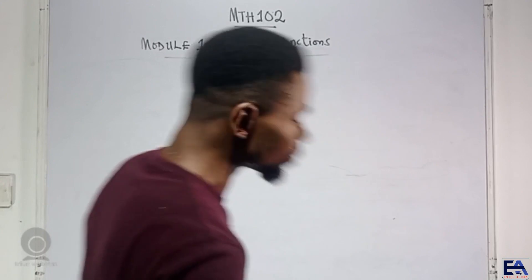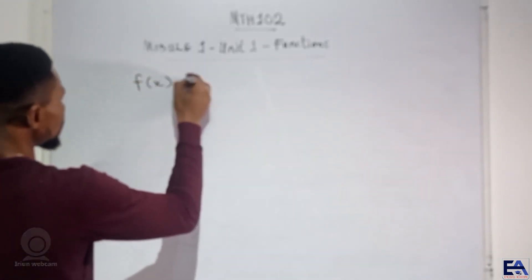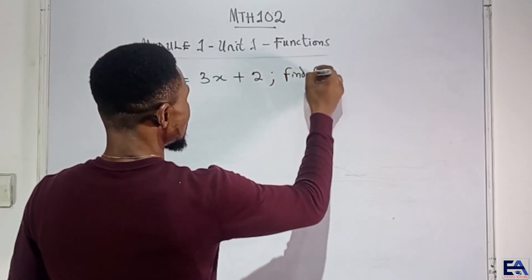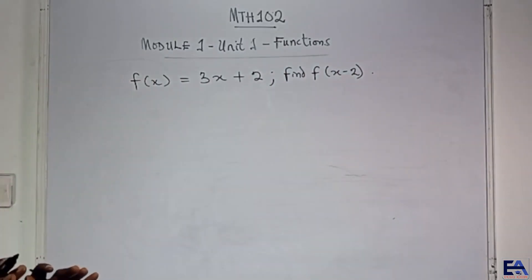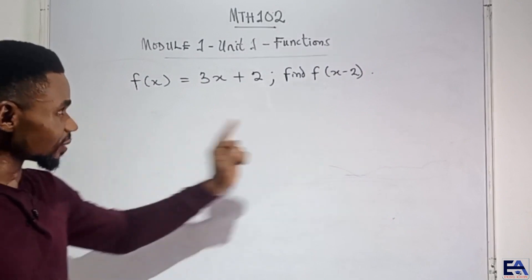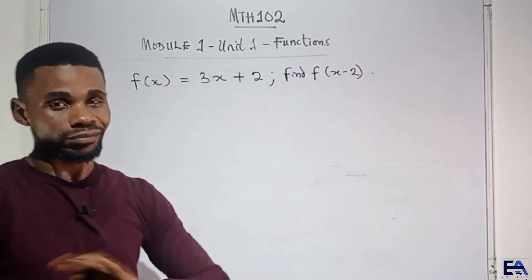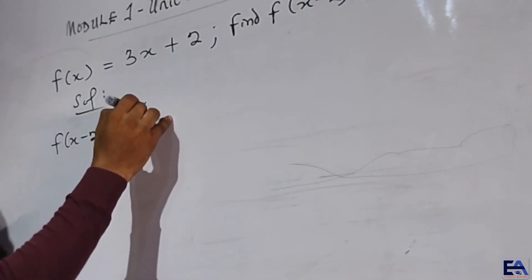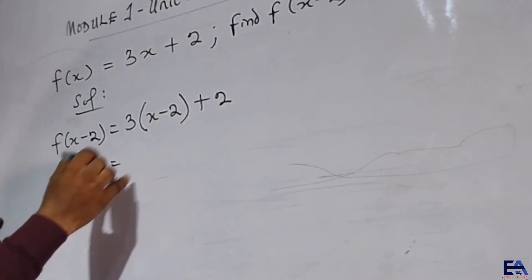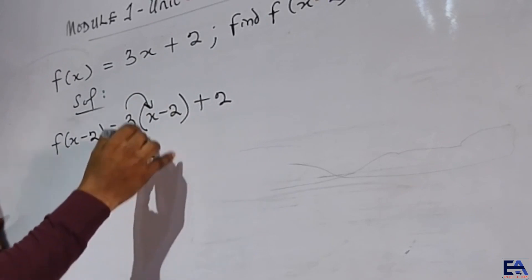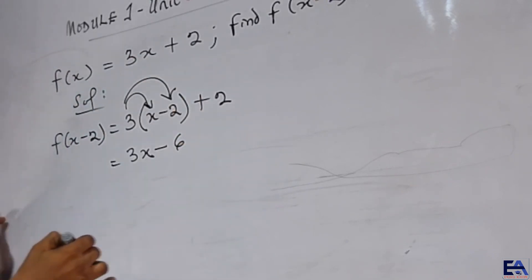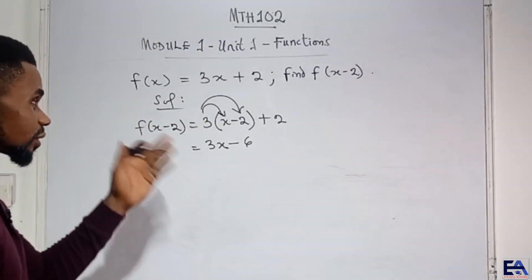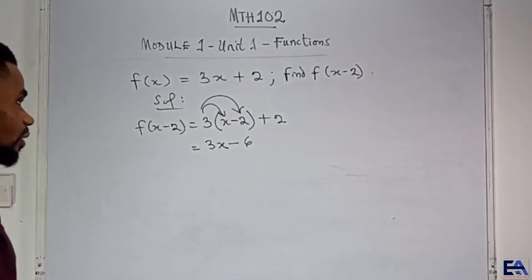In this case, let's say f of x is equal to 3x plus 2, and the question says find f of x minus 2. No problem. Don't fear. What this thing is just trying to make you do is that anywhere you see x, replace it with x minus 2. Finish. So just say f of x minus 2 would be 3 times x minus 2 plus 2. Simple. So 3 times x would give you 3x, then 3 times minus 2 would give you minus 6. That's expansion of bracket. It's one of our preliminary videos. So just check those videos out. Introductory algebra. You will see all these things there.